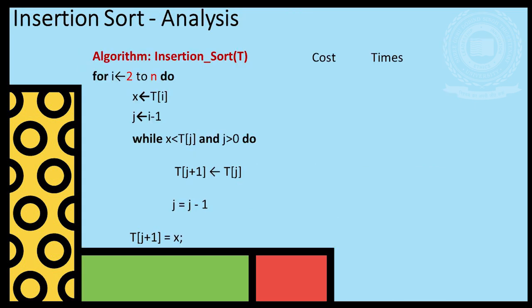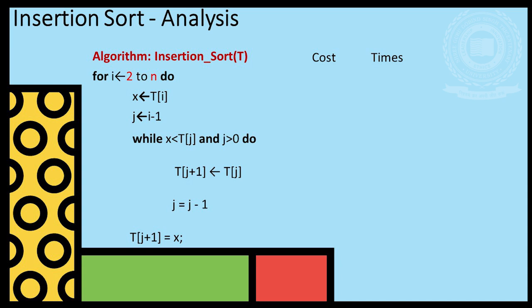On the other hand, cost and number of execution times are demonstrated resulting in order of n square for average and worst case.